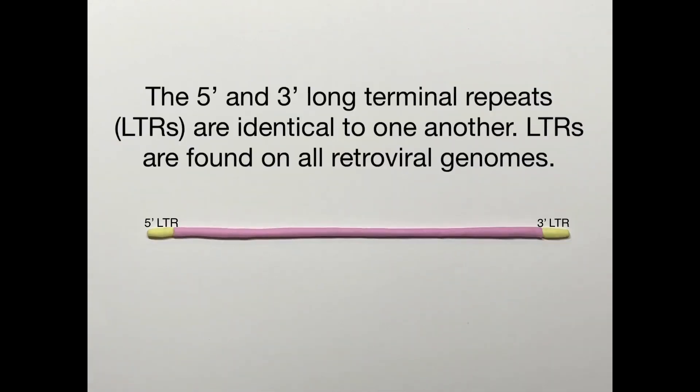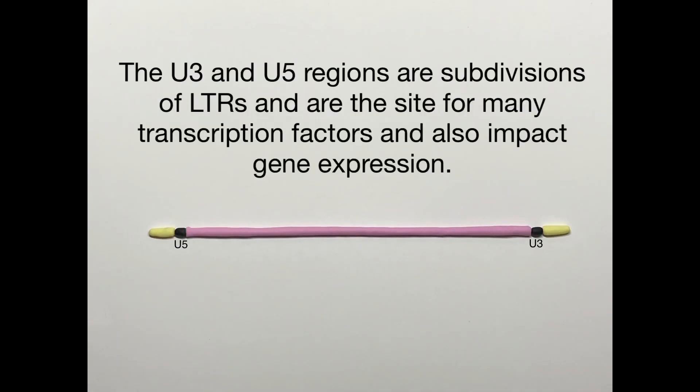First, we have the 5' and 3' long terminal repeats that flank the ends of the HIV genome. LTRs are found on all retroviral genomes and are important for turning the RNA into DNA. Within the 5' LTR and 3' LTR is the U5 and U3 region, respectively. They impact gene expression and are the sites for many transcription factors.